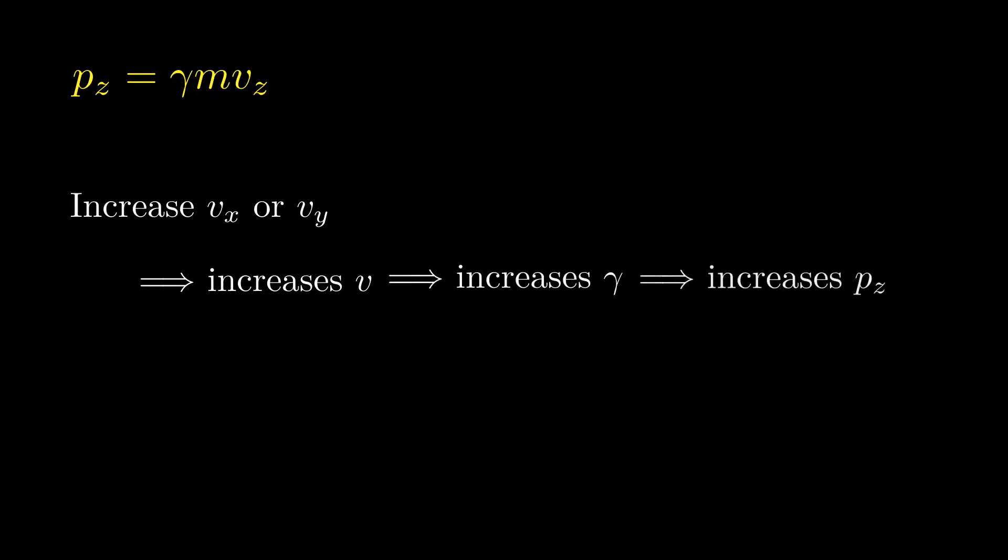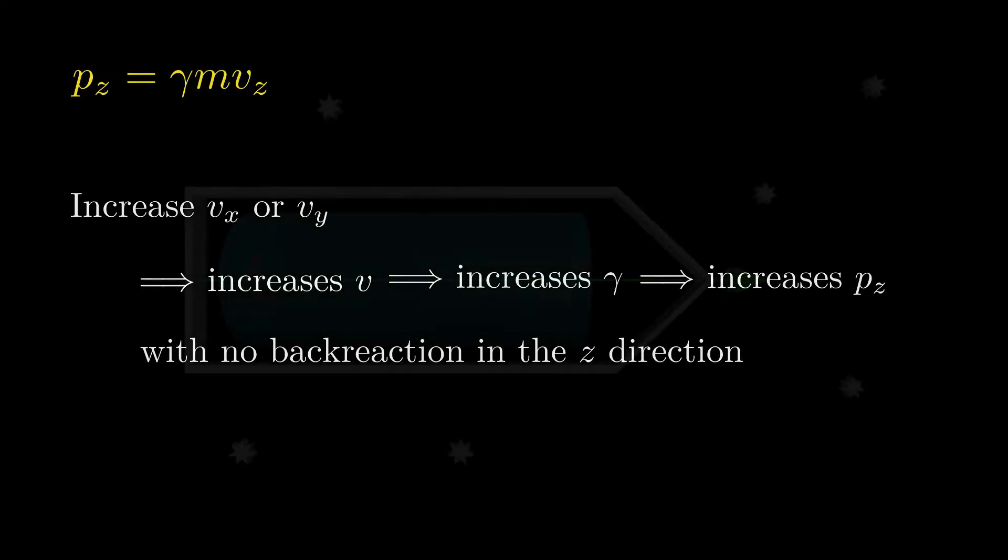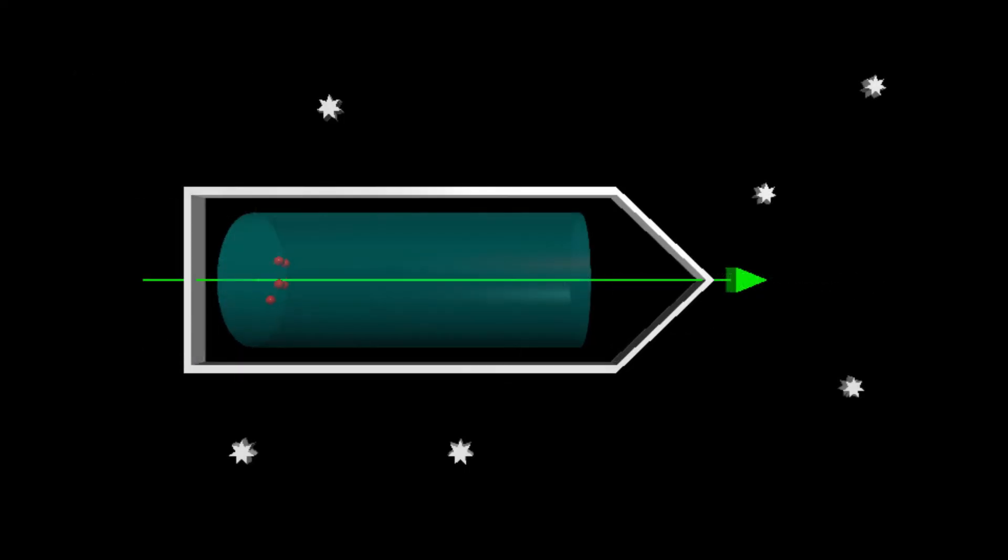Since the forces are being exerted in the X and Y directions, there is no back reaction along the Z direction. Of course, there will be a back reaction in the X or Y directions, but that can be compensated in various ways. For example, by using two counter-rotating beams of ions.